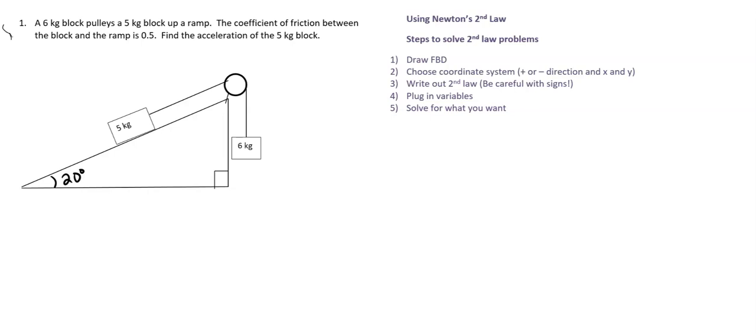Okay, so for this problem, let's see. We have gravity acting on the 5 kilograms. The force of gravity is what, 50 Newtons? We have our normal force pushing up. We have tension in this rope.